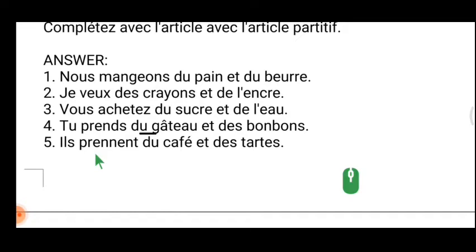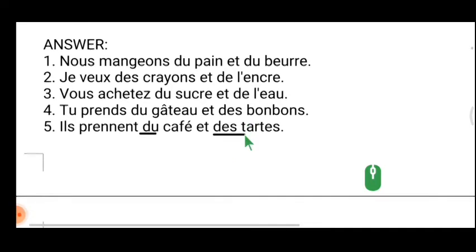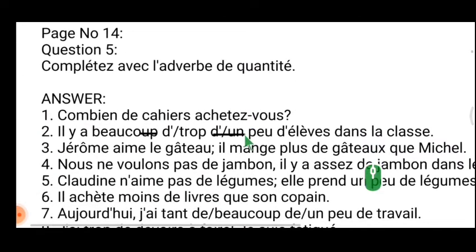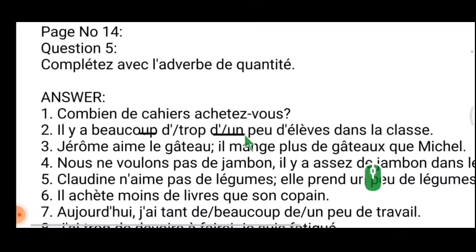'Tu prends du gâteau et des bonbons' — you take some cake and some chocolates. The first 'some' is masculine so 'du,' and the second 'some' is plural so 'des.' 'Il prend du café et des tartes' — 'du café' is masculine, 'des tartes' is plural, so 'des.' That covers the article partitif exercise.